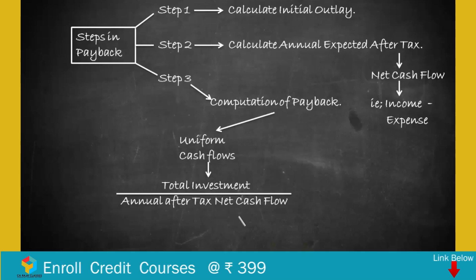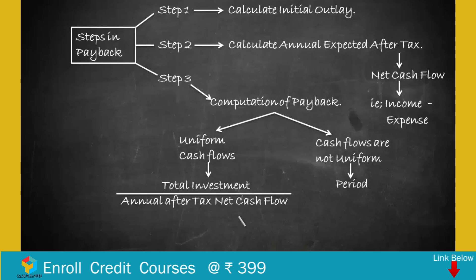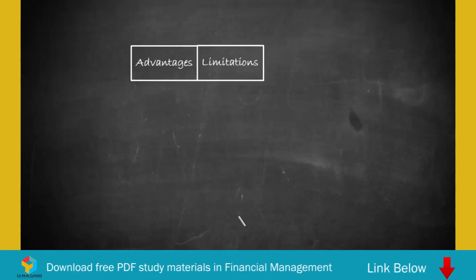For example, if your investment is 1 lakh and every year the project generates 20,000, then 1 lakh divided by 20,000 equals 5 years. But if the project carries uneven cash flows, you cannot apply this formula. Instead, you have to look at cumulative cash flows — add each year's cash flow, and the period in which cumulative cash flows match the initial outlay is the payback period.